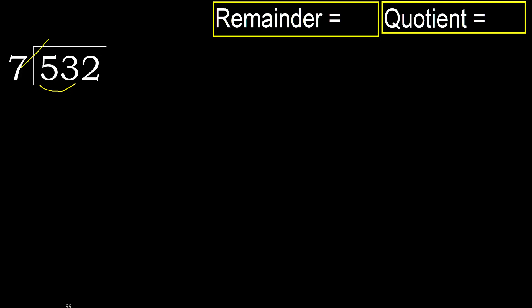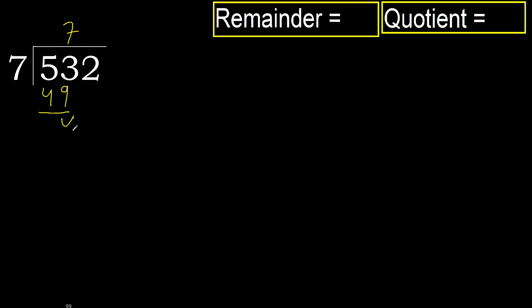7 multiplied by which number is nearest to 53 but not greater? 7 multiplied by 8 is 56, which is greater. 7 multiplied by 7 is 49, which is not greater. Subtract: 53 minus 49 is 4.